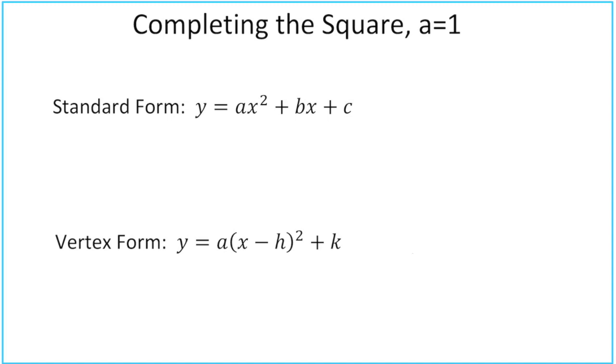So the question is, what if we have standard form? How can we take standard form and turn it into vertex form? Or if we think about an example, what if we have something in standard form, like y equals x squared minus 4x plus 9, and we don't want to make a table. We want to turn that into its vertex form.